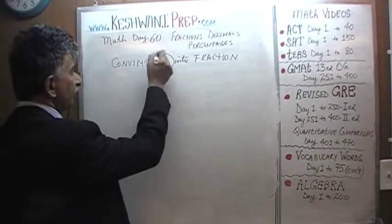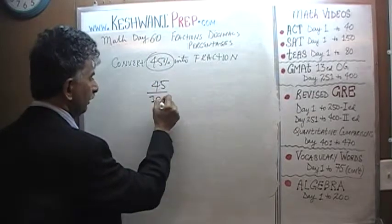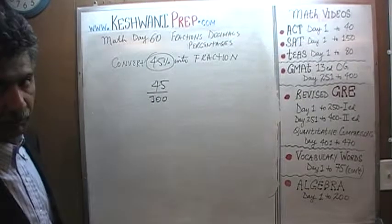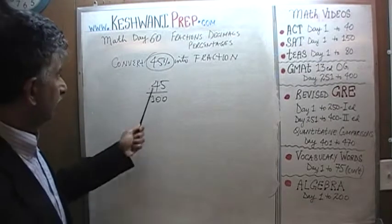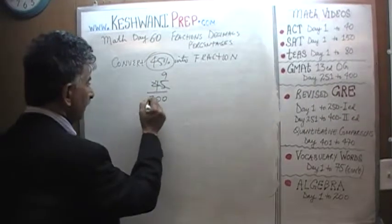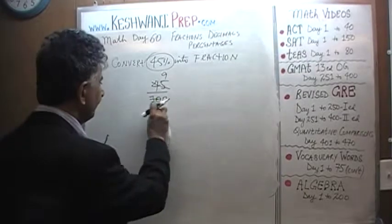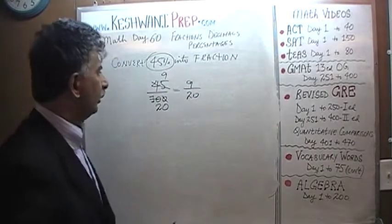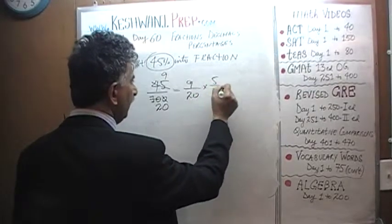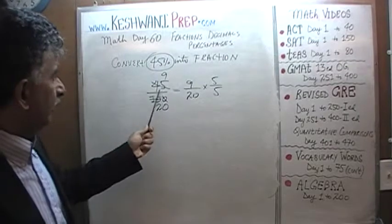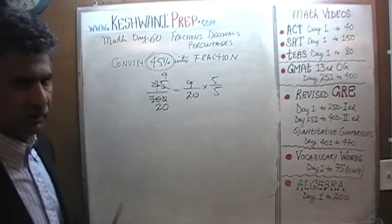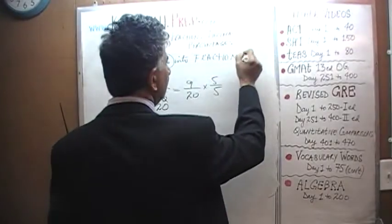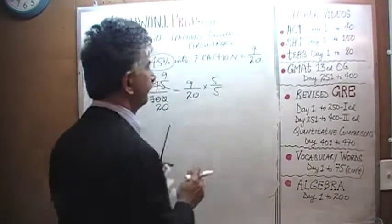For example, 45% means 45 over 100. But we can't leave it like that because no answer choice will match. We have to reduce it. We realize 45 is a multiple of 5 and 100 is a multiple of 5, so we divide top and bottom by 5. 45 divided by 5 is 9, and 100 divided by 5 is 20. In its most reduced form, 45% as a fraction is 9 over 20.